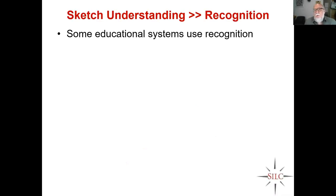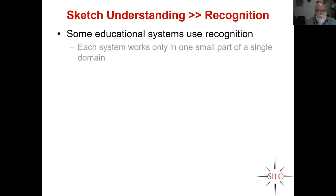When most people think about sketch understanding, they think about recognition. But recognition is such a tiny part of sketch understanding. When people have built educational software systems that use sketching before, they've done recognition — and that means they don't work very well. Each system works in only one small part of a single domain. There are systems that do chemistry, but only a particular kind of chemical diagram, or electronic circuits — just electronic circuits, in some cases particular kinds. You have to train a new system for every new subpart of every domain.